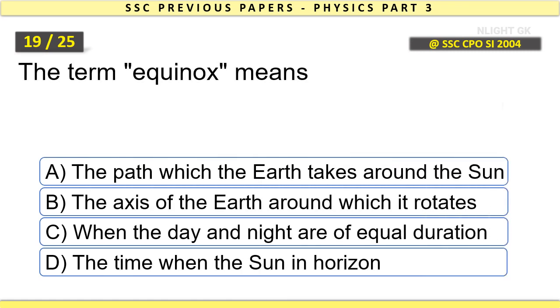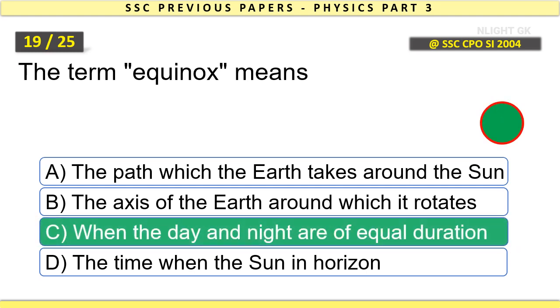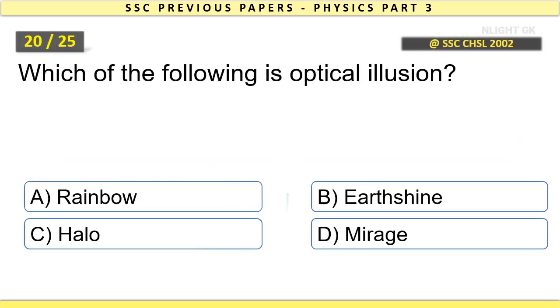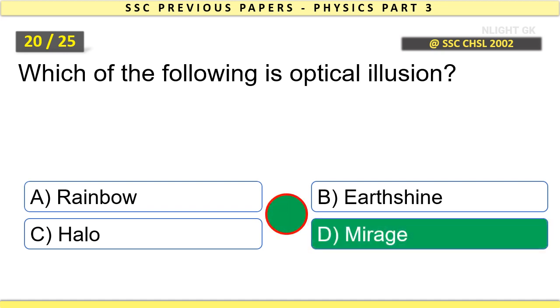The term equinox means when the day and night are of equal duration. Which of the following is optical illusion? Mirage.